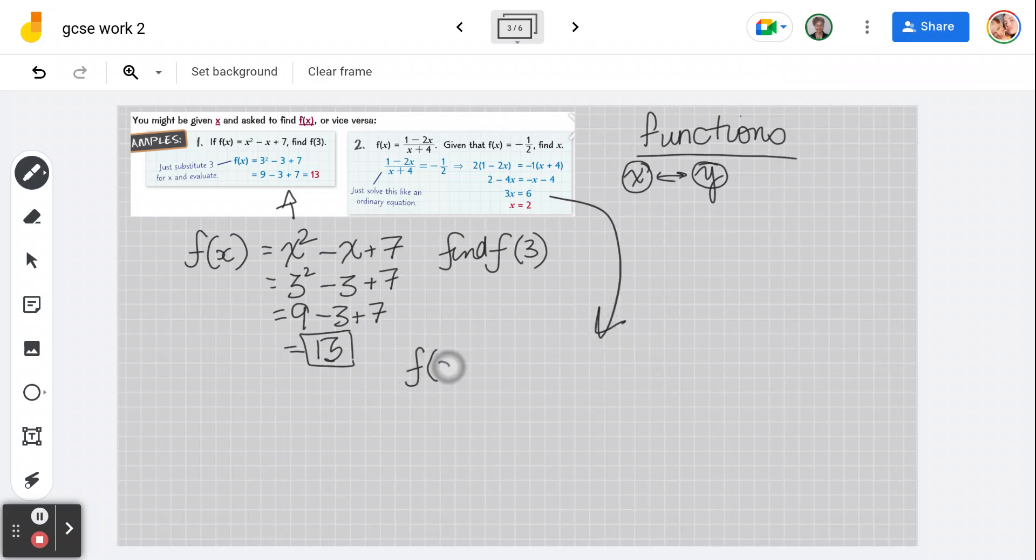We have a function that equals 1 minus 2x over x plus 4. Given that f(x) equals negative 1 half, find x. So we're saying that this is equal to that, right?